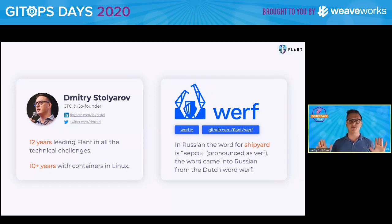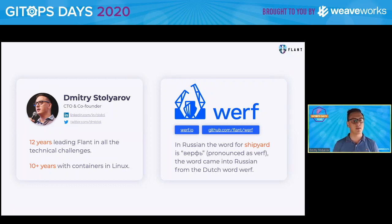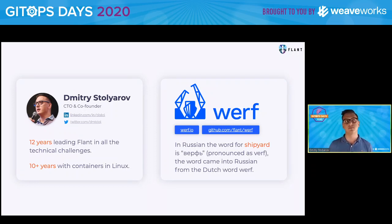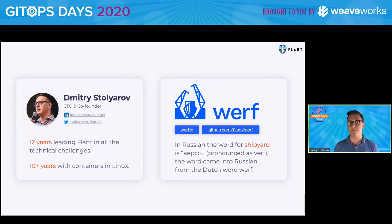Okay, that's a short story about me. A short story about Werf: it's the name for the shipyard in Russian, and actually it's not a Russian word — it's a Dutch word, so it came into Russian. We use Russian and probably Dutch pronunciation, and the first letter is not V, it's W — Werf.